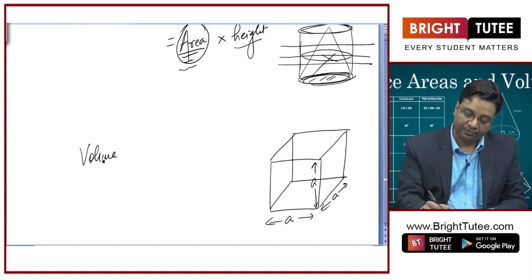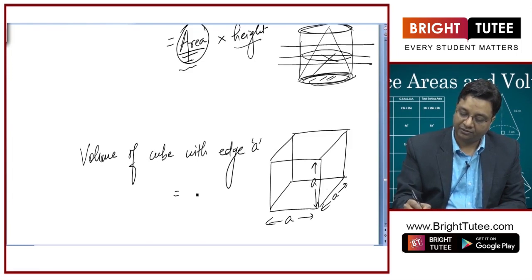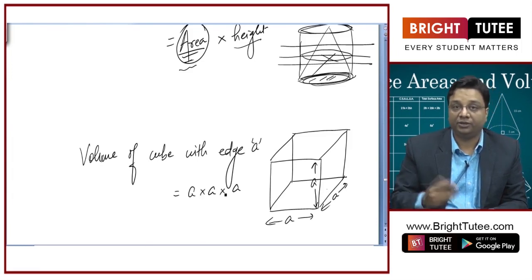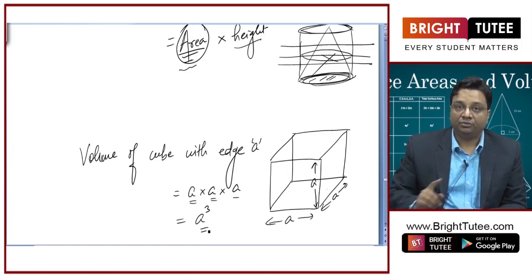So, volume of cube is equal to A into A into A, length into breadth into height which is same. So, A cubed, this is the volume of cube.